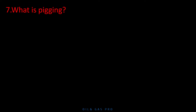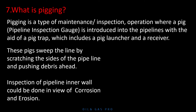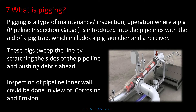What is pigging? Pigging is a type of maintenance inspection operation where a pig (pipeline inspection gauge) is introduced into the pipelines with the aid of a pig trap, which includes a pig launcher and a receiver. These pigs sweep the line by scratching the sides of the pipeline and pushing debris ahead. Inspection of the pipeline inner wall can be done in view of corrosion and erosion.